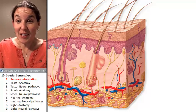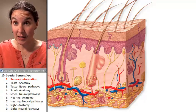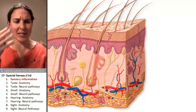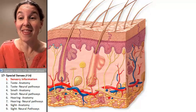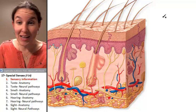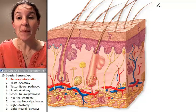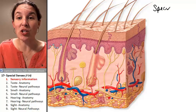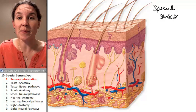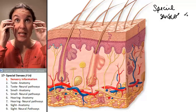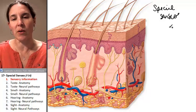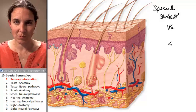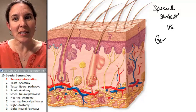Special senses are senses that are received by special organs. And that's our topic today. We're spending the entire time talking about the special sensory organs that receive their organs, as opposed to general senses.